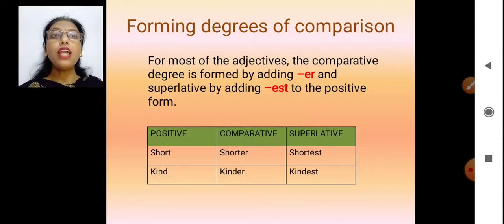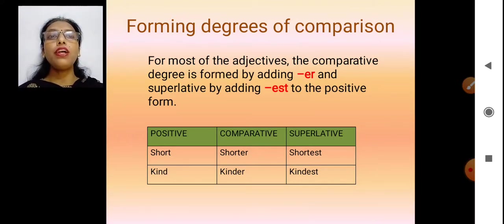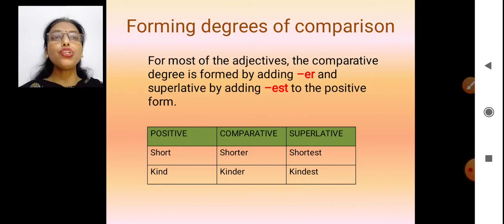Now let's see how we form degrees of comparison. The simplest way is that we add -er in the comparative degree and -est in the superlative degree. For example: short, shorter, shortest; kind, kinder, kindest.